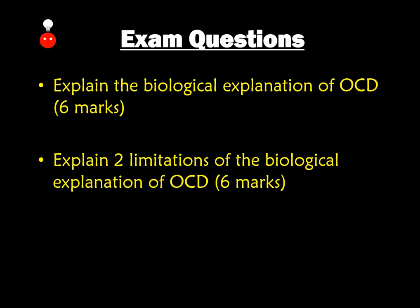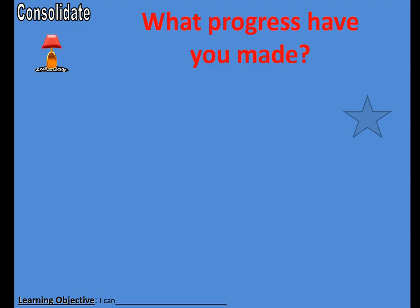Here are two exam questions that you might want to work on following this. Number one: explain the biological explanation of OCD. To access the top band with AQA, it must be accurate and detailed — you don't have to quote everything out of a textbook, but you need accuracy with key terminology. Number two: explain two limitations of the biological explanation of OCD. I've given you several — please explain them using the PEEL system: make your point, fully explain it, evidence it, and then link it back — 'therefore this weakens the biological explanation.' I hope this session on explanations of OCD has helped. The next session I upload will be on treating this. Thank you for watching.